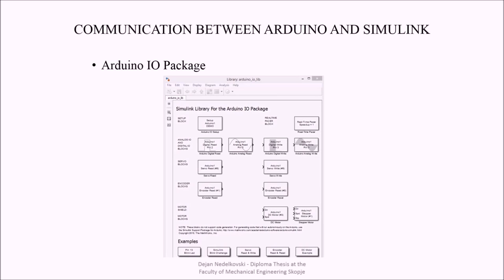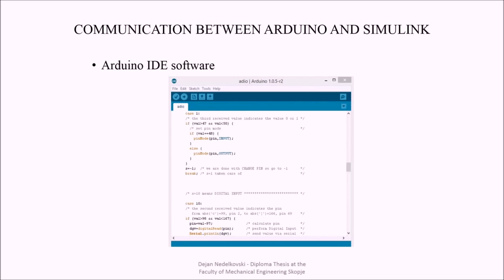Before creating the Simulink model, first I had to install the Arduino input output package library for Simulink, which consists of the blocks for communication with the Arduino card. Also, by using the Arduino software, I had to burn on the Arduino Mega card the code that is coming together with the Arduino input output package.